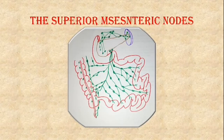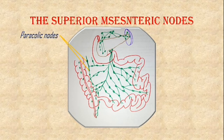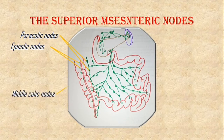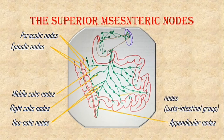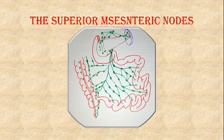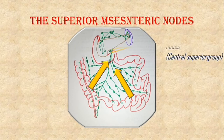Now let's go on to the superior mesenteric nodes. Along the marginal artery are the paracolic nodes. The epicolic nodes run along the taenia coli. The middle colic nodes follow the middle colic artery. The right colic nodes follow the right colic artery, and the ileocolic nodes follow the ileocolic artery. Here are the appendicular nodes and the presacral nodes. Here is the juxtaintestinal group of the superior mesenteric nodes. All of these drain into the central superior group of superior mesenteric nodes as shown here.